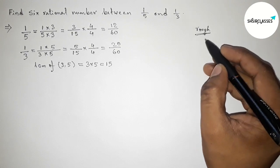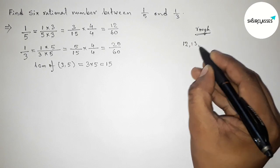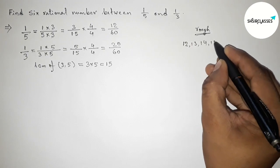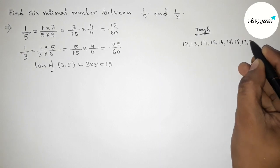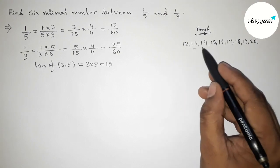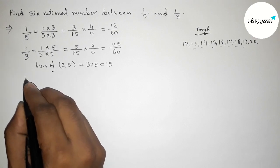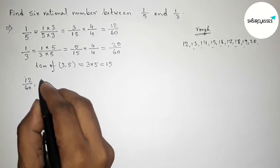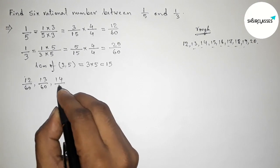Now, between 12 and 20 we can find 7 integers. But we have to take only 6 integers, so I am taking up to 18 — you can take 19 also, but here I am taking up to 18. Now write down all the rational numbers.